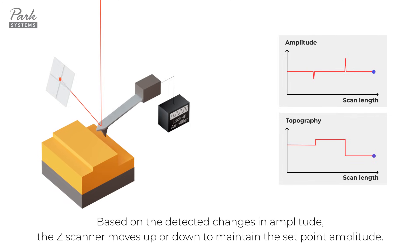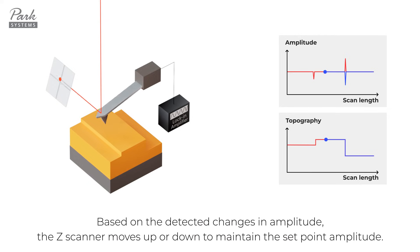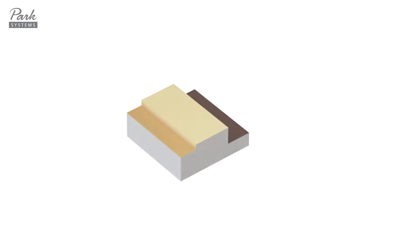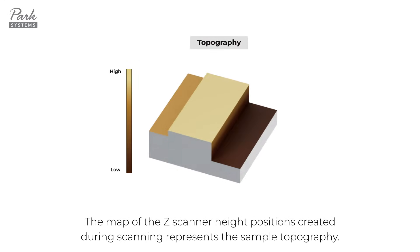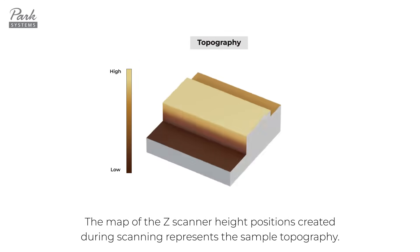Based on the detected changes in amplitude, the Z-scanner moves up or down to maintain the set point amplitude. The map of the Z-scanner height positions created during scanning represents the sample topography.